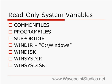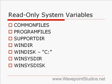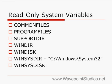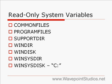WinDir is the name of the folder that contains Windows — it's usually C:\Windows. WinDisc is the drive that contains the Windows program, usually the C drive. WinSysDir is the Windows system folder, which is usually C:\Windows\System32. WinSysDisk is the drive that contains the Windows system folder, usually C:.